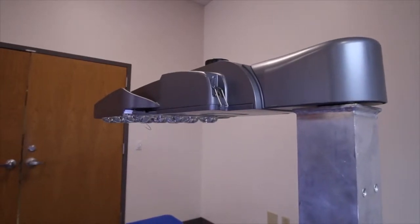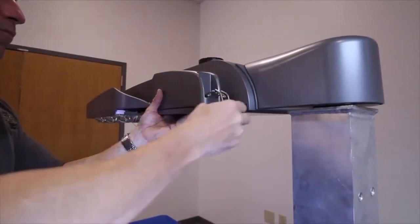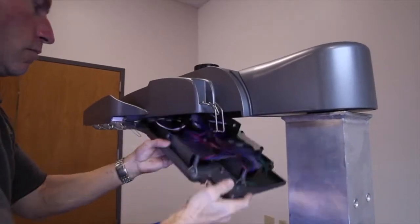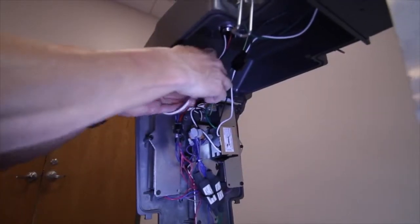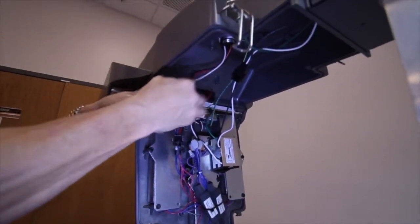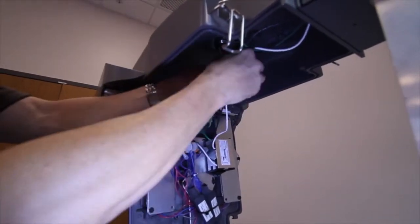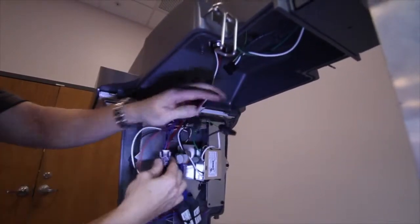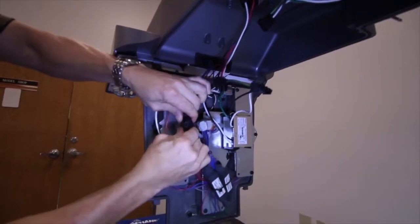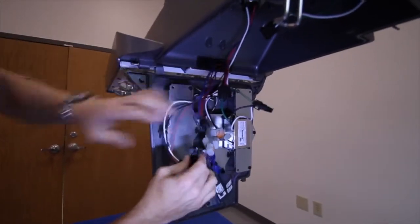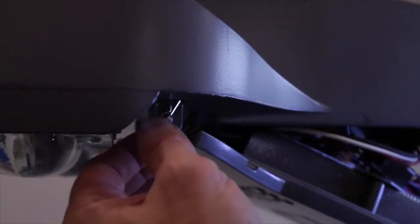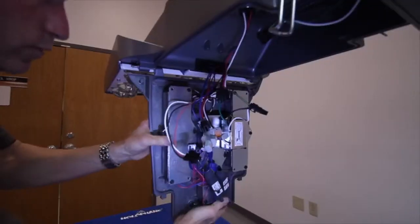For easy maintenance and repair, you can remove the door from the Mongoose. Simply undo the two latches. Disconnect the photocell, the power supply, and the driver module connectors. Remove the hinge pin and slide the door off the luminaire.